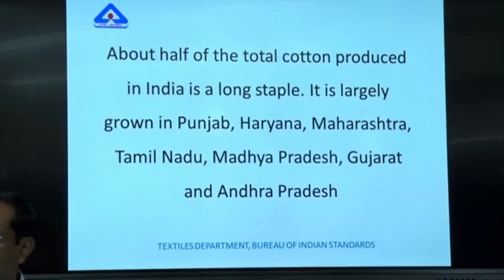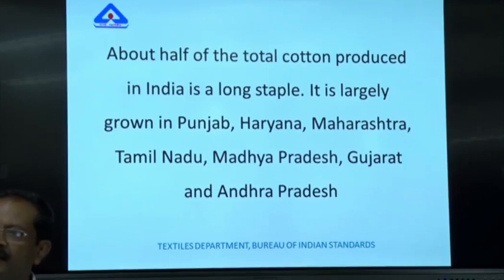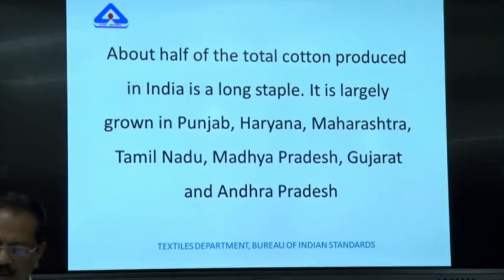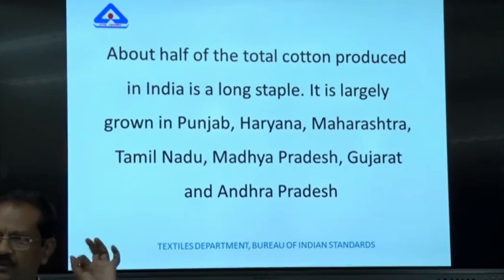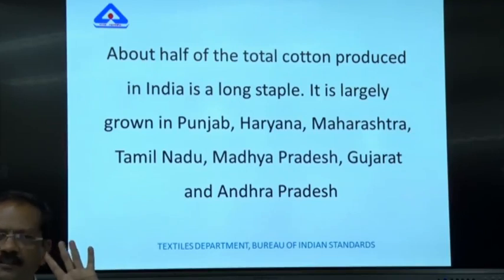About 44 percent of cotton production in India is medium staple, and the remaining 6 percent is short staple. Short staple fiber is used for coarser yarns. For example, denim yarn used for jeans is thicker and coarser, so short fiber yarns can be used there — and they are cheaper.